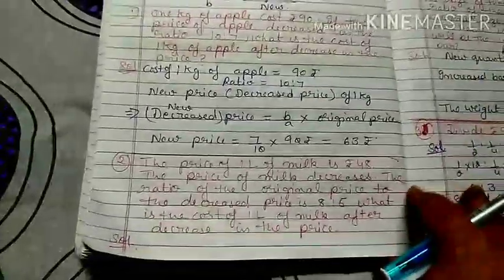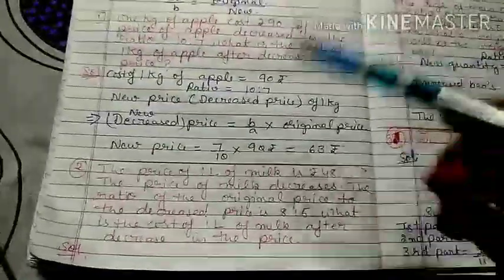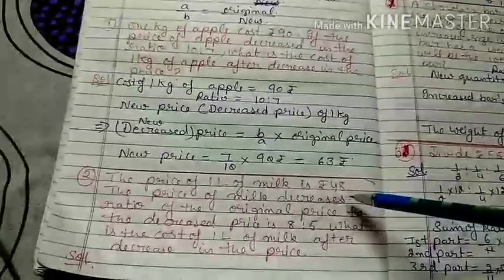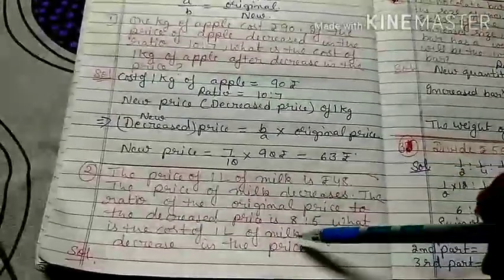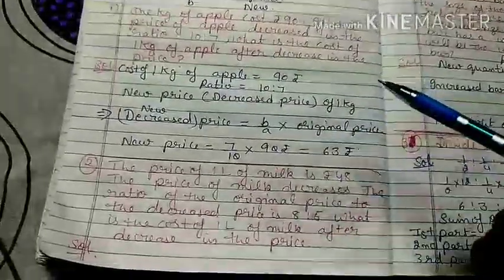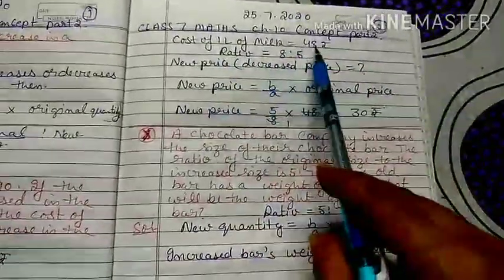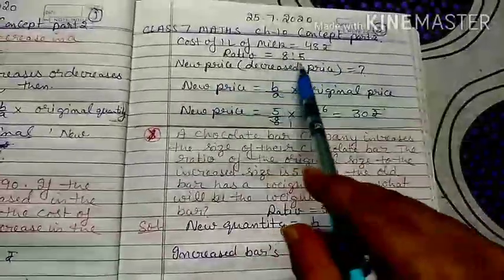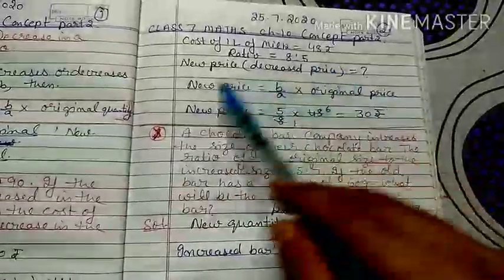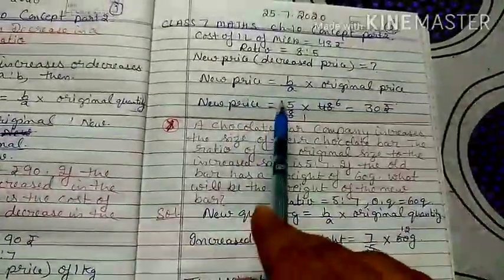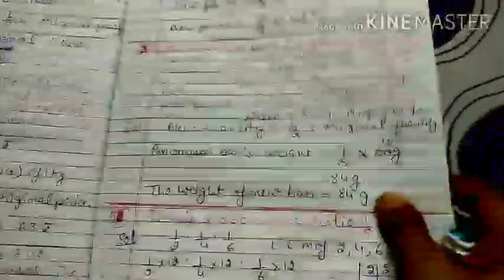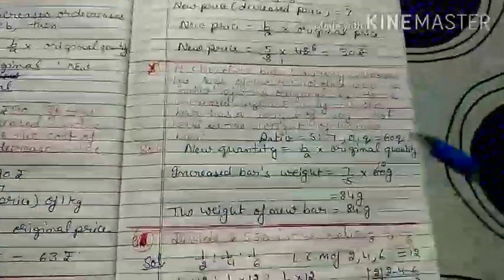Second question: Original cost of 1 liter of milk is 48 rupees. If the price decreases according to the ratio 8:5, what is the new decreased price? Applying the formula directly: new price = (b/a) into original price = (5/8) into 48 = 30 rupees.